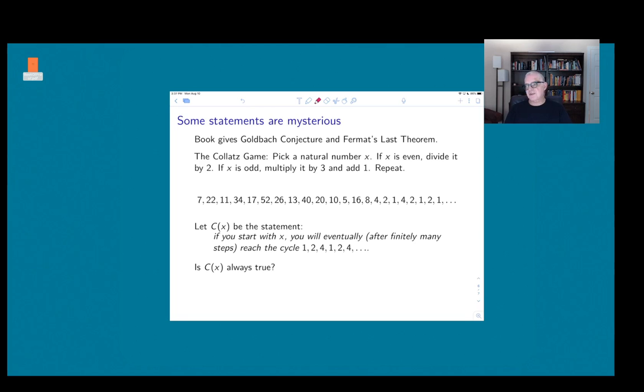Just because something is a statement and has a definite truth or falsehood to it doesn't mean we know which one it is. If you read in the book, which of course I'm expecting everybody to have done, they give two examples: the Goldbach conjecture and Fermat's Last Theorem. Fermat's Last Theorem took 300 years to figure out if it was true or false, and the Goldbach conjecture is still not known. I thought just for fun I would give you another example of a statement to which we don't know the answer.